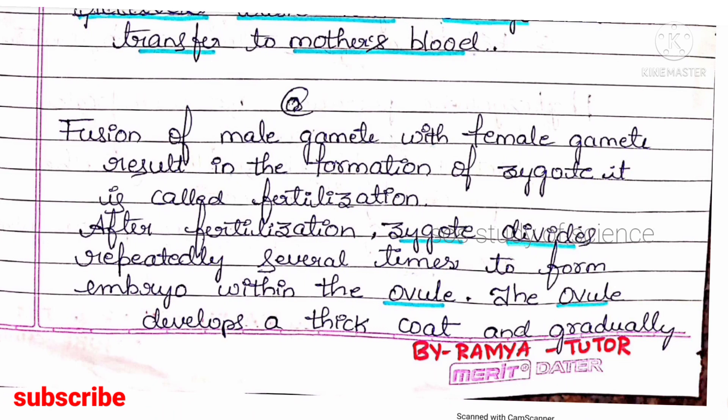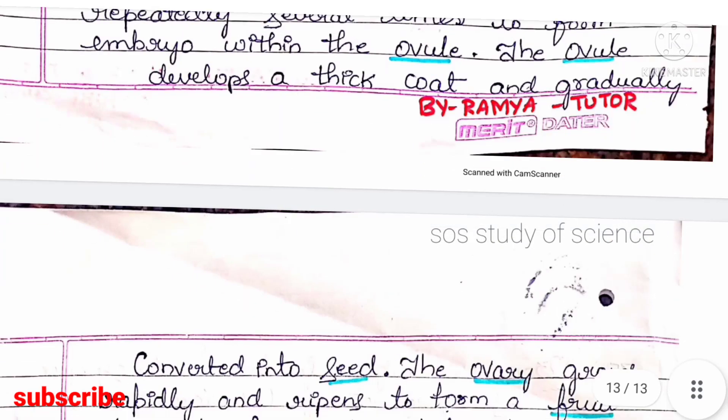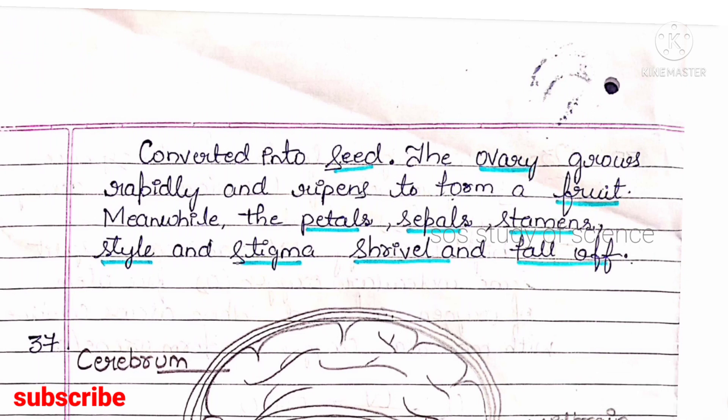Alternatively, you can answer: what is fertilization and what steps take place in the flower after fertilization? Fertilization is the fusion of male and female gametes resulting in the formation of a zygote. After fertilization, the zygote divides repeatedly to form an embryo within the ovule. The ovule develops a thick coat and converts into a seed; the ovary grows rapidly and ripens to form a fruit, while petals, sepals, stamens, style, and stigma shrivel and fall off.